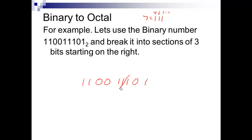Write your binary number down and put big slash marks every third digit from the right, making groups of three. Write your chart of one, two, four over each group. For example, with groups of three bits: four plus two is six, two plus one is three, four plus one is five — giving you the octal number 635.